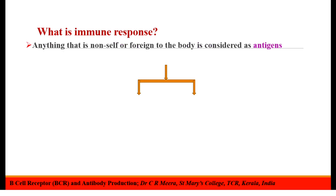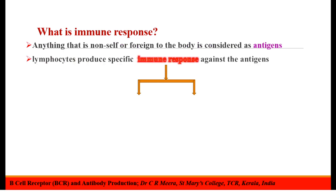First, let's see what is immune response. Anything that is non-self or foreign to the body is considered as antigens. Once antigens enter our body, lymphocytes produce specific immunological reactions or immune responses against the antigen in order to remove them and to prevent the development of an infection or disease due to that particular antigen. This immune response can be humoral or cell-mediated.